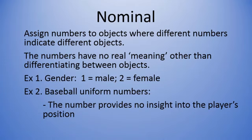So if someone has the number 23 on their back and someone has the number 25, it doesn't mean that the person with 25 is better, has a higher average, hits more home runs, or anything like that. It just means they're not the same player as number 23. In this example, it's nominal because the number simply differentiates between objects.